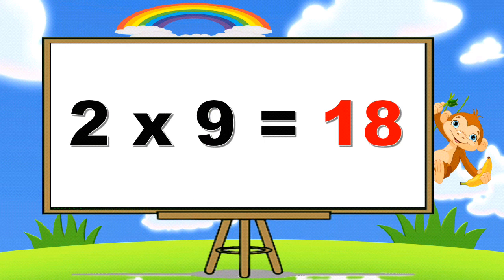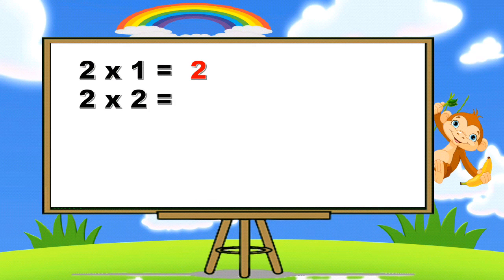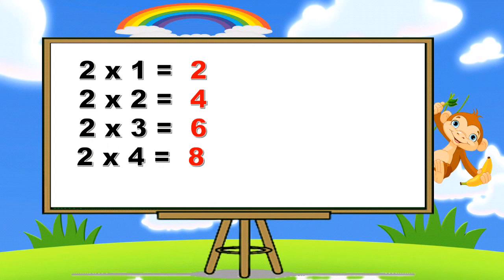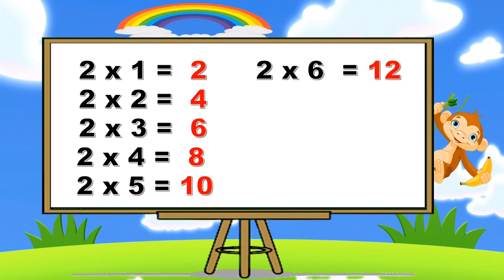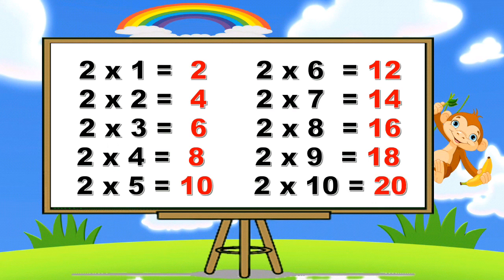Two nines are eighteen. Two tens are twenty. Two ones are two. Two twos are four. Two threes are six. Two fours are eight. Two fives are ten. Two sixes are twelve. Two sevens are fourteen. Two eights are sixteen. Two nines are eighteen. Two tens are twenty.